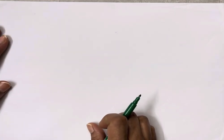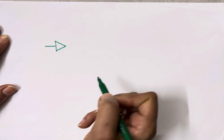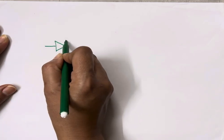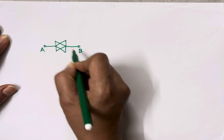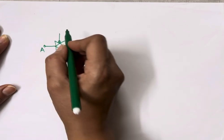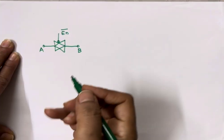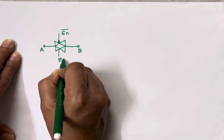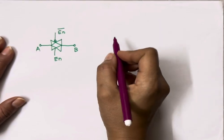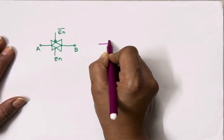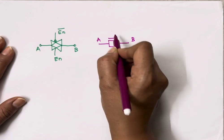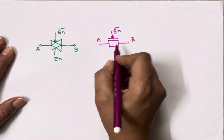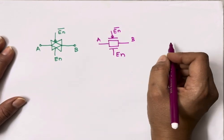Now let's see the symbols of the transmission gate. The very first symbol is drawn as a triangle — here is my input A, here I get my output B, here is enable-bar, and here is enable. A second symbol has input A, output B, enable-bar, and enable arranged similarly.